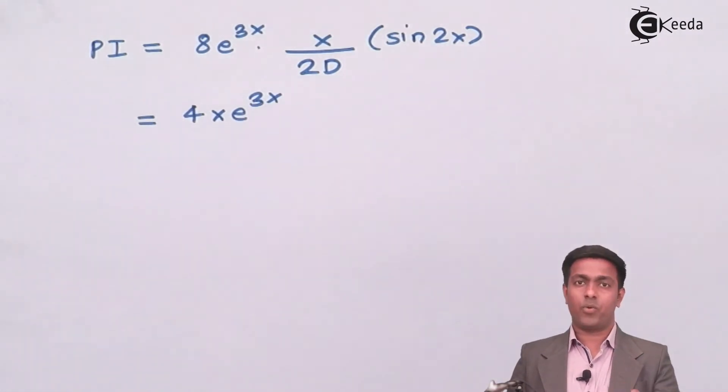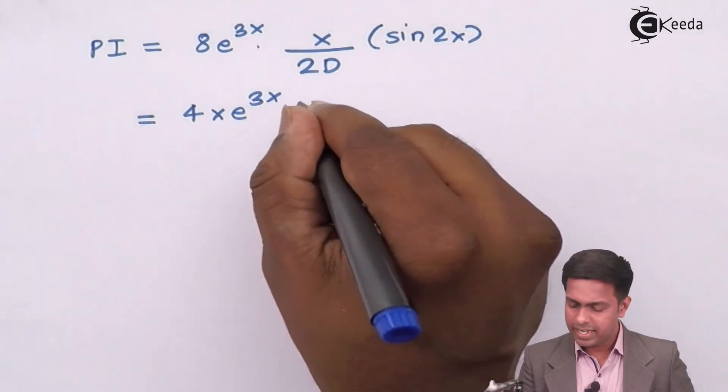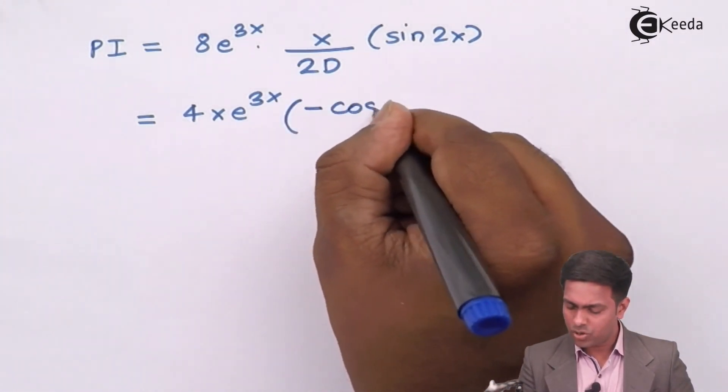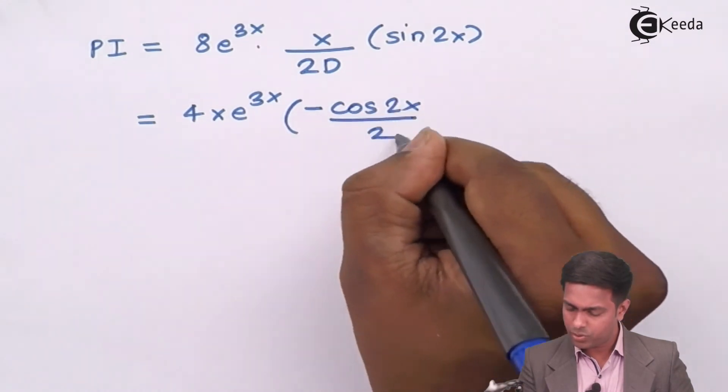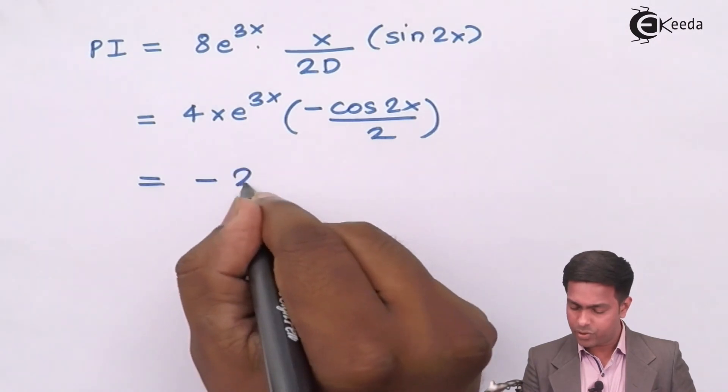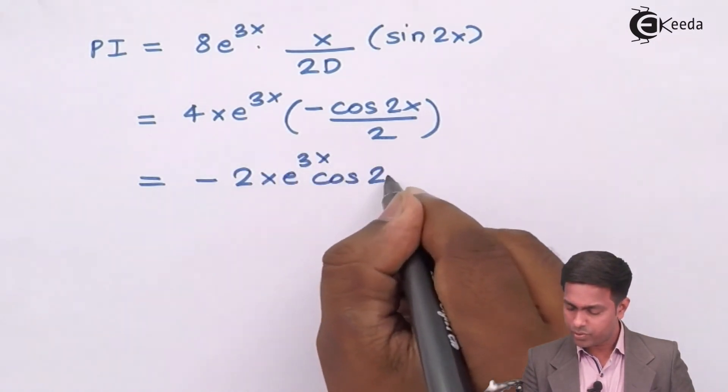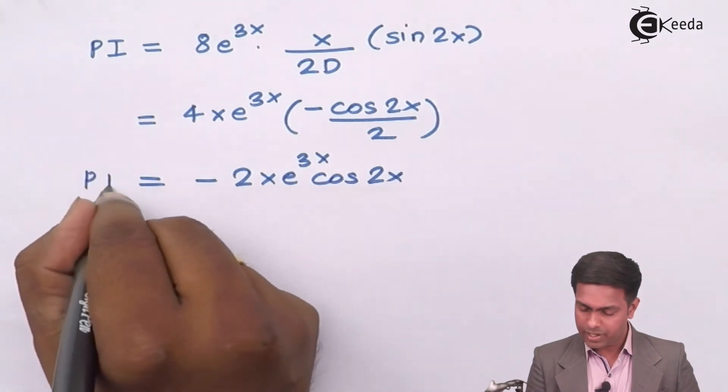Now 2 times 4 is 8 so 4 times e to the power 3x and the value of D is d by dx that is derivative but 1 upon D is the integration. So integration of sin of 2x is -cos of 2x by 2. We will get -2x e to the power 3x into cos of 2x and this is the value of particular integral.